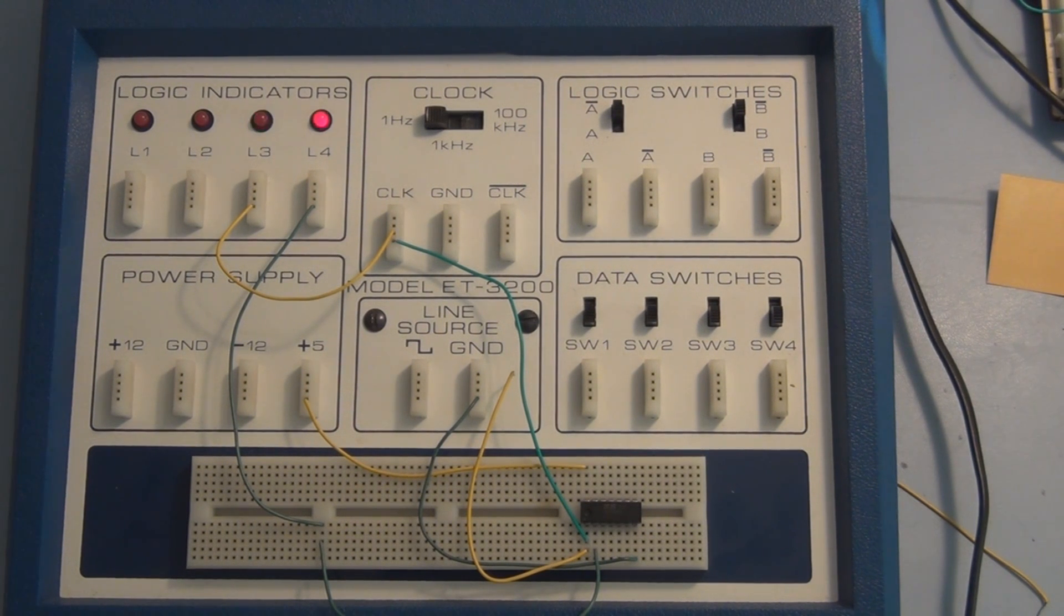And the result is that they are flashing opposite each other. So that's a quick review of the three basic logic gates: the AND gate, the OR gate, and the NOT gate, also known as the inverter. Please subscribe and comment. And thanks for watching.